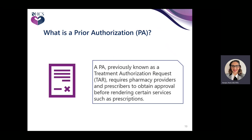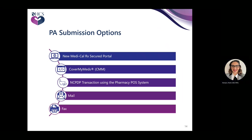Policy also includes specific requirements for family planning access, care, and treatment for FPACT, and other programs. Prior authorization submission options available to prescribers and pharmacy providers include the Medical Rx Secure Portal, CoverMyMeds, fax, and mail. Options solely available to pharmacy providers include NCPDP transactions to use with their POS system. Providers and prescribers using the Secure Portal can reference the PA job aid on the Education and Outreach page of the provider portal.